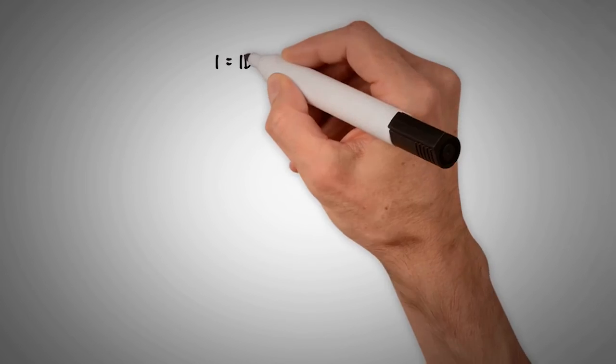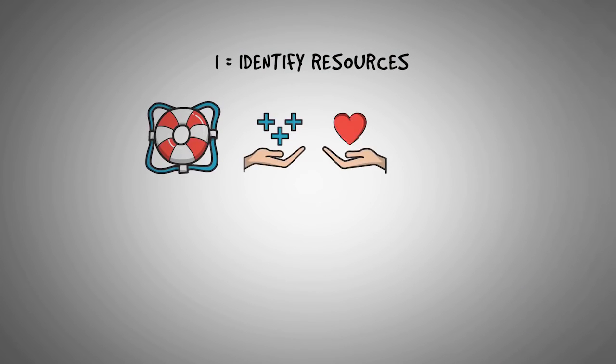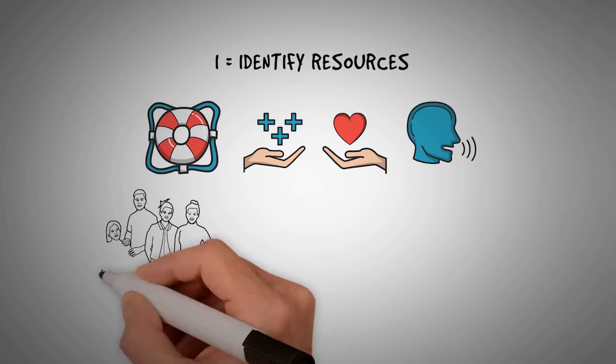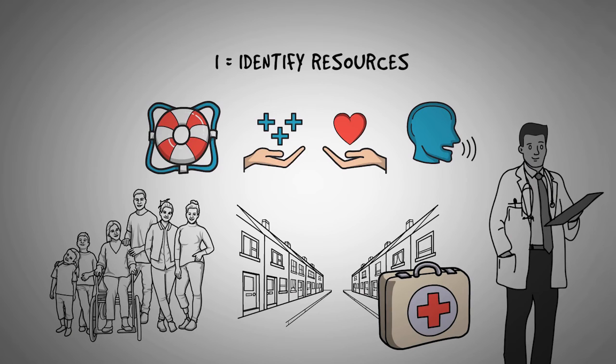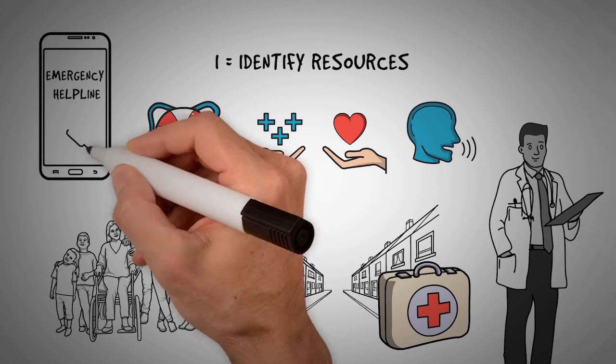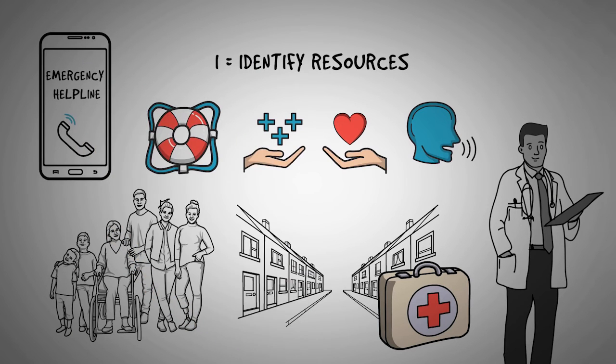I is for identify resources. Identify resources for help, assistance, support, and advice. This includes friends, family, neighbors, health professionals, and emergency services. Make sure you know the emergency helpline phone numbers, including those for psychological help if required.